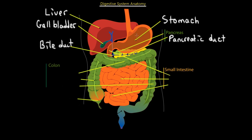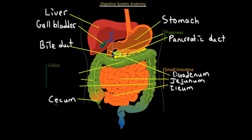The duct that passes through the pancreas is called the pancreatic duct, and the ducts that pass through the liver to the gallbladder and to the pancreas - this whole connected structure - is called the common bile duct. The food is going to go through the stomach and then move down into the small intestine. The small intestine is made up of three parts: the first part is called the duodenum, past that it moves into the jejunum, and the final part of the small intestine is called the ileum.